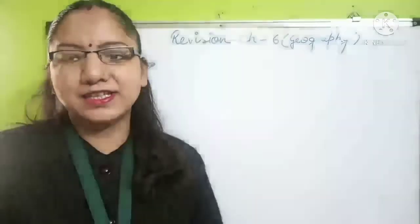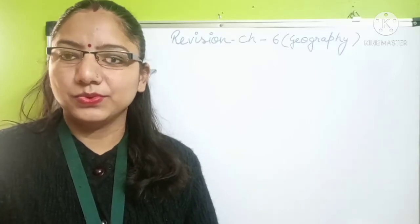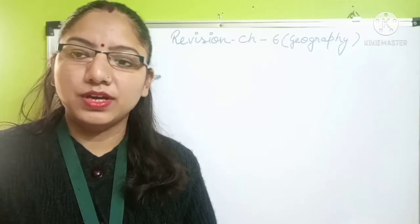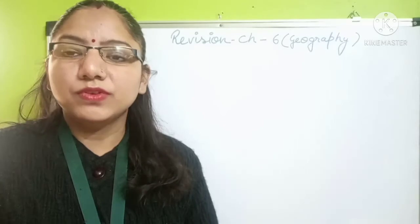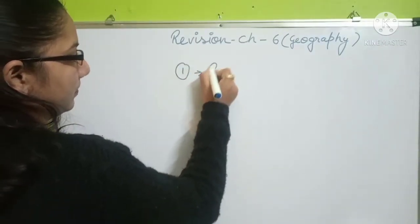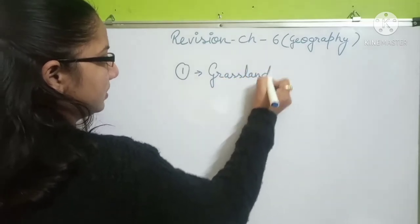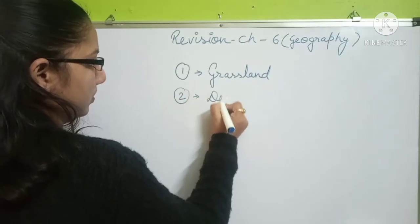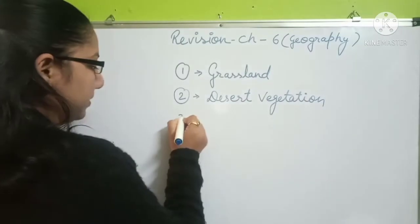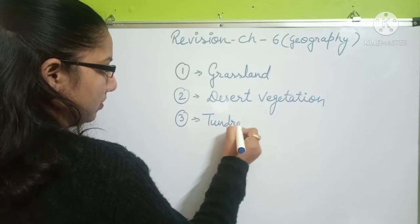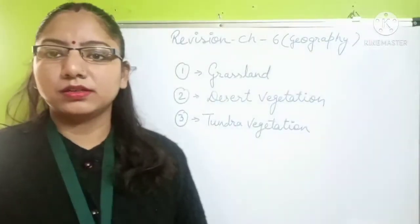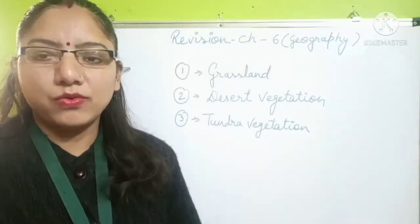Welcome back students. I am your SSD teacher Vandana Joshi and you are watching SSD 2 students. In our previous video we studied about natural vegetation and wildlife in the forest where we studied different kinds of forests. Today we will study more natural vegetation and wildlife — number one: the grassland, number two: desert vegetation, and number three: tundra vegetation.